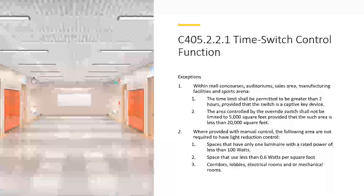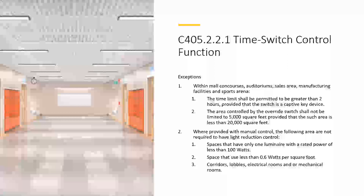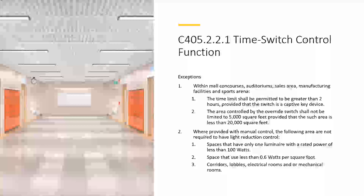Any individual override switch shall control the lighting area for not larger than 5,000 square feet or 465 square meters. The exceptions are mall concourses, auditoriums, cell areas, manufacturers, and sports arenas — the area controlled by the switch is not limited to 5,000 square feet, provided such area is less than 20,000 square feet. Where provided with manual control, spaces are not required to have light reduction control if they only have one luminaire rated at less than 100 watts, spaces using less than 0.6 watts per square foot, or corridors, lobbies, electrical rooms, and mechanical rooms.